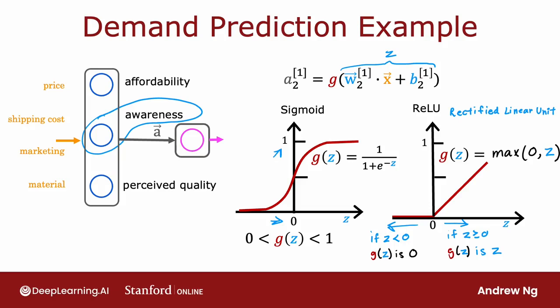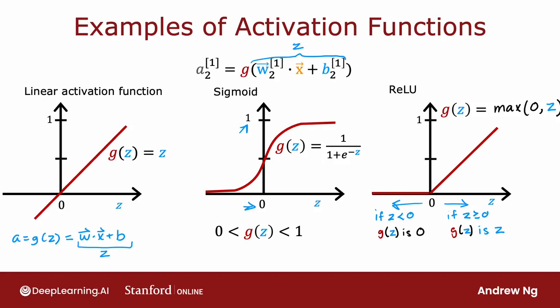More generally, you have a choice of what to use for g(z). And sometimes we'll use a different choice than the sigmoid activation function. Here are the most commonly used activation functions. You saw the sigmoid activation function, g(z) equals this sigmoid function. On the last slide, we just looked at the ReLU or rectified linear unit, g(z) equals max of zero comma z.